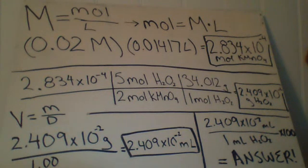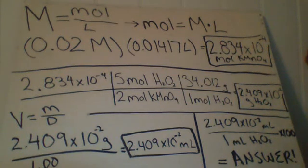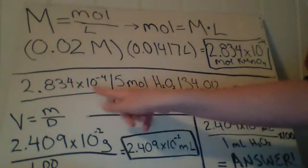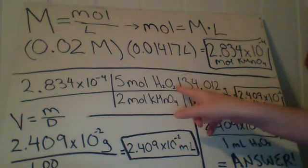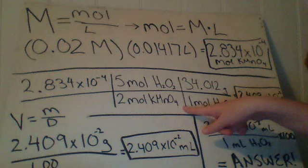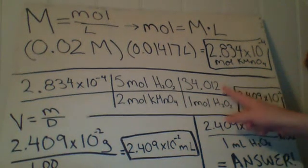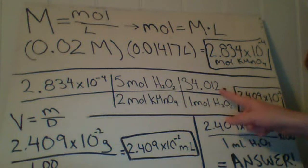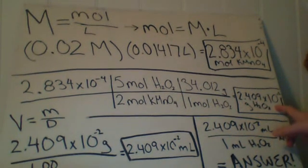Next, after we have the moles of potassium permanganate, we use that to find the grams of hydrogen peroxide. We put that into stoichiometry, into dimensional analysis. We go from moles, then to the mole ratio, which is 5 moles of hydrogen peroxide over 2 moles of potassium permanganate. After we get to hydrogen peroxide, we multiply by the molar mass to find grams of hydrogen peroxide, which is 2.409 × 10^-2.